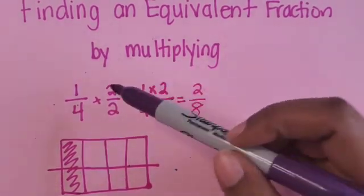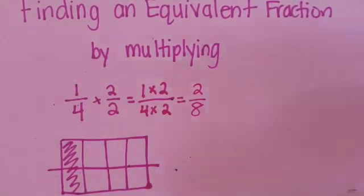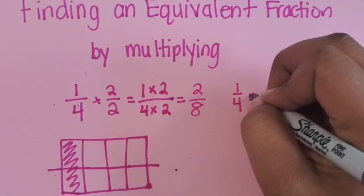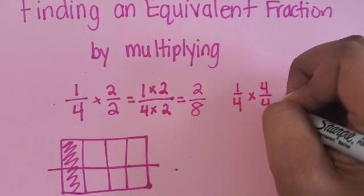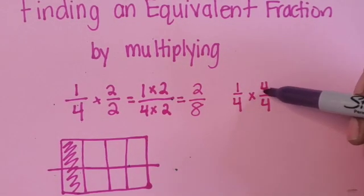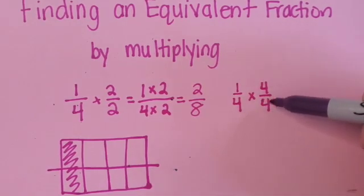So what if we multiplied 1/4 times 4/4? 4/4 is equivalent to one whole because the numerator and the denominator are the same amount.